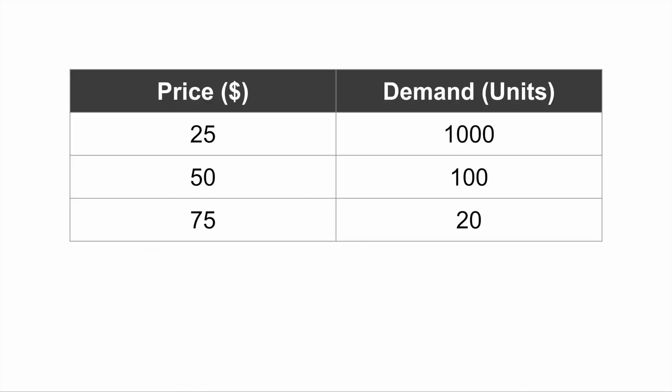Let's look at an example of how prices and demand change for a given product. In the table, when the price is $25 the demand is 1,000 units. When the price doubles to $50, we see the demand drops considerably from 1,000 down to 100. And when the price further increases to $75, we see that the demand decreases again down to 20 units. This is consistent with what we see in the real world: demand drops as price rises.